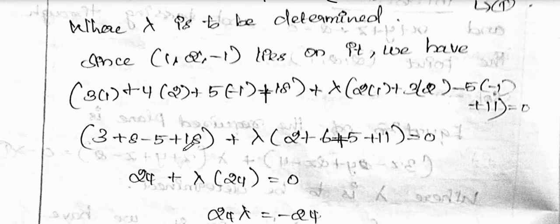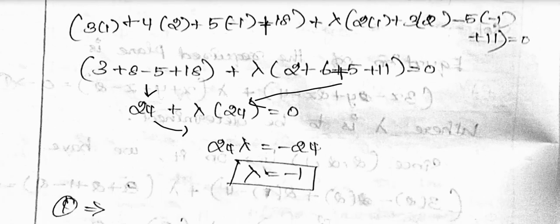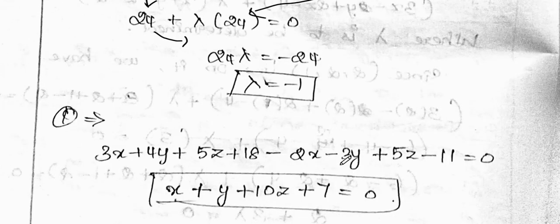This gives 24, plus lambda times 24. So 24 minus 24 cancel, giving lambda = -1. So the equation becomes: lambda = -1, meaning we substitute -1 times the second equation: -2x - 3y + 5z - 11 = 0.